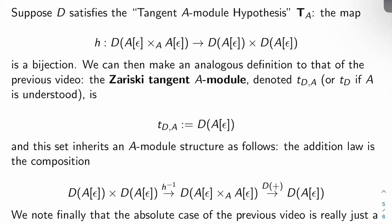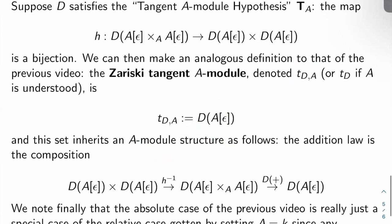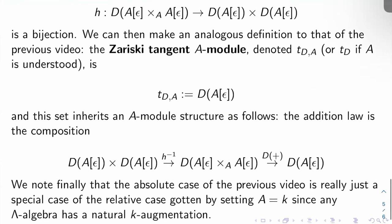We want the map h from D(A[ε] ×_A A[ε]) to D(A[ε]) × D(A[ε]) to be a bijection. We can then make an analogous definition to that of the previous video, the Zariski tangent space definition. The Zariski tangent A-module, denoted t_{D,A} or t_D if A is clear, is just D(A[ε]). And this set inherits an A-module structure as follows.